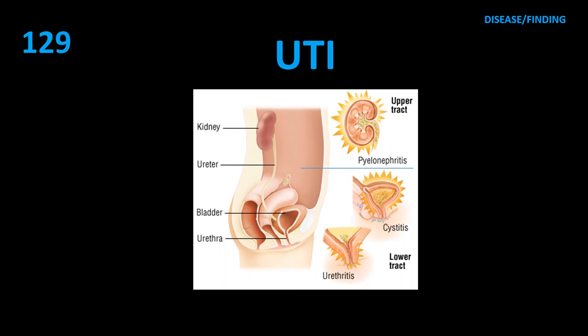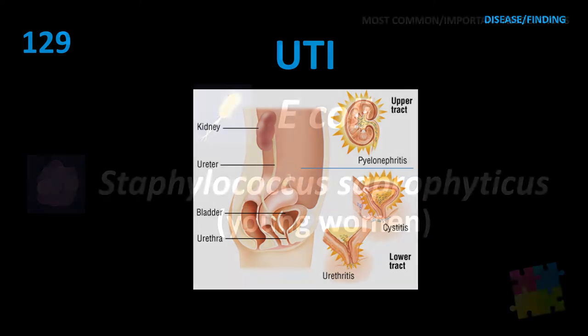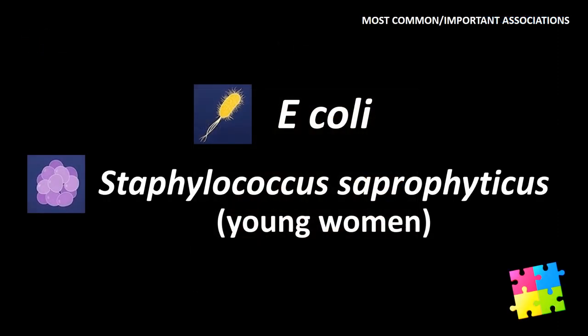Item 129: Most common UTI — E. coli; Staph saprophyticus in young women.